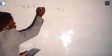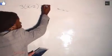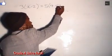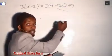So I have an equation right here in front of me and it goes like this: 3 times open bracket x minus 2 close bracket equals 5 times open bracket 4 minus 2x close bracket plus 7.